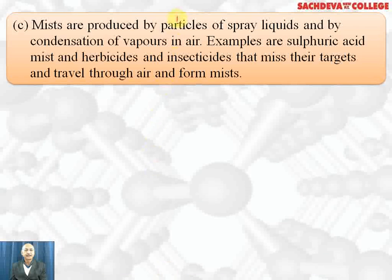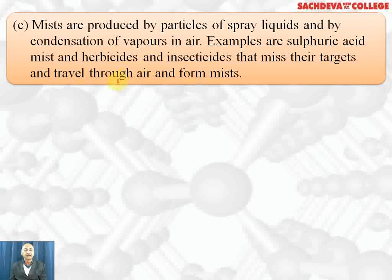Mist is usually produced by particles of spray liquids and by condensation of vapors in air. Examples are sulfuric acid mist and herbicides and insecticides. They are used to a large extent in agriculture these days. They miss their target and travel through air and form mists.